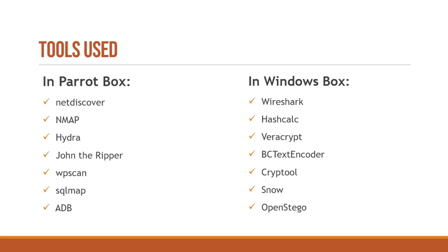Regarding the tools: on the Parrot box you'll use net discover, nmap, Hydra, John the Ripper, WPScan, SQLMap, and ADB (Android Debug Bridge). On the Windows box you'll use Wireshark, HashCalc, VeraCrypt, BC Text Encoder, CryptTool, and OpenStego. You need to understand how these tools work and have hands-on experience with each of them.